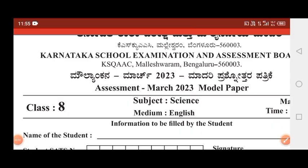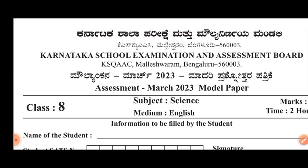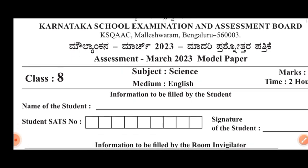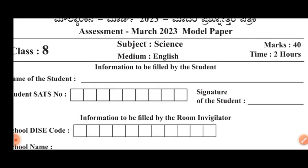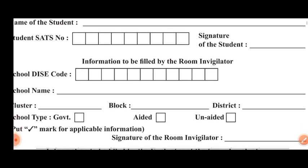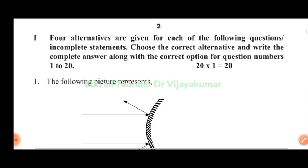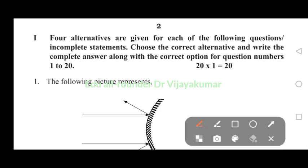Dear 8th standard students, welcome to AGO Allrounder channel. Now we are watching your science public exam paper, English medium, with answers. Maximum marks 40, time two hours. Four alternatives are given for each of the following questions or incomplete statements. Choose the correct alternative and write the complete answer along with the correct option.